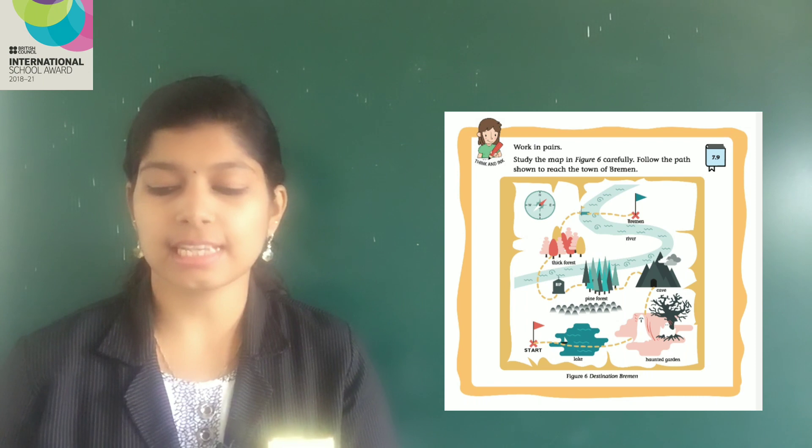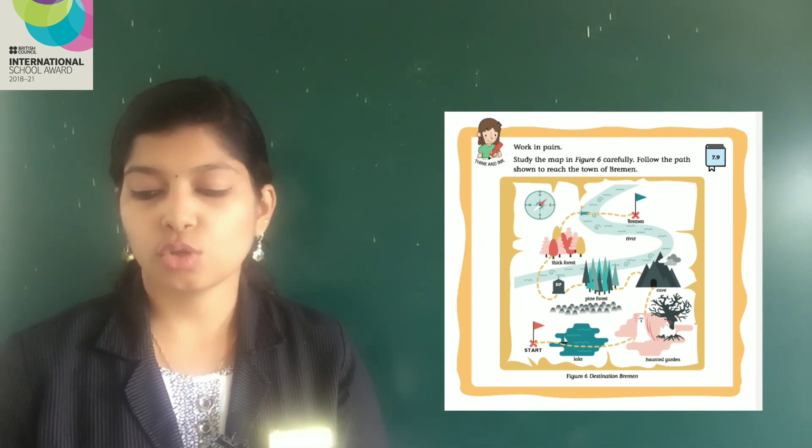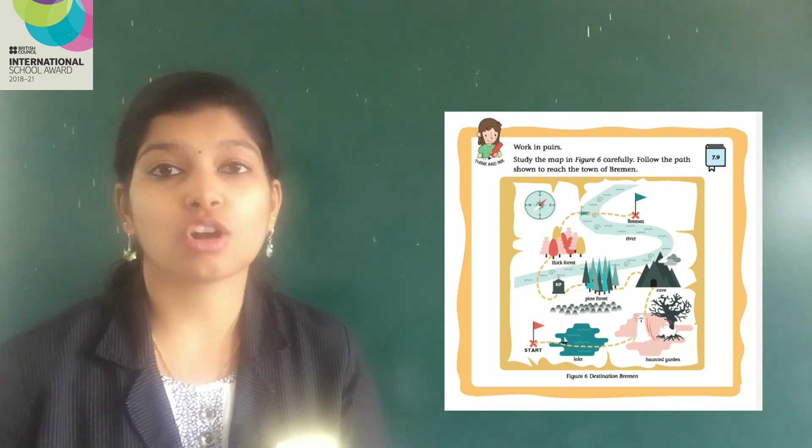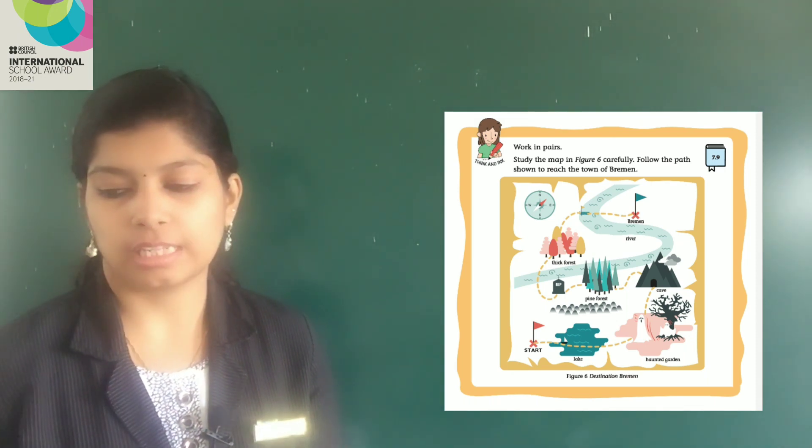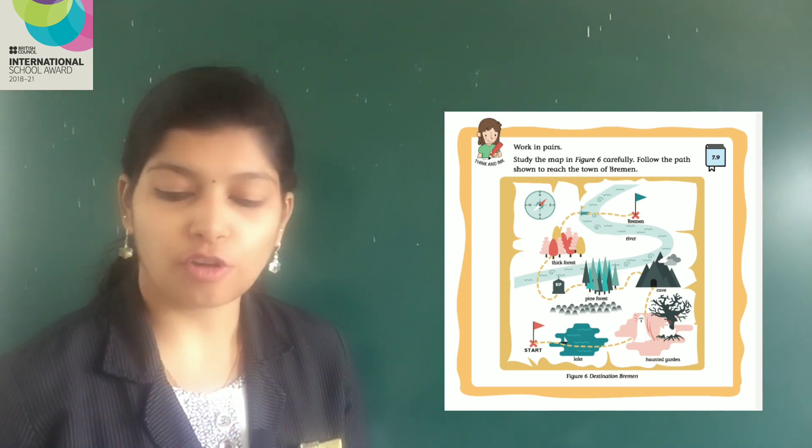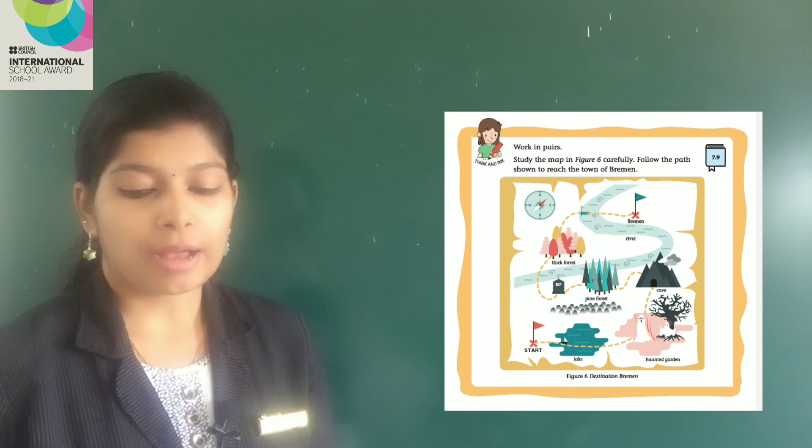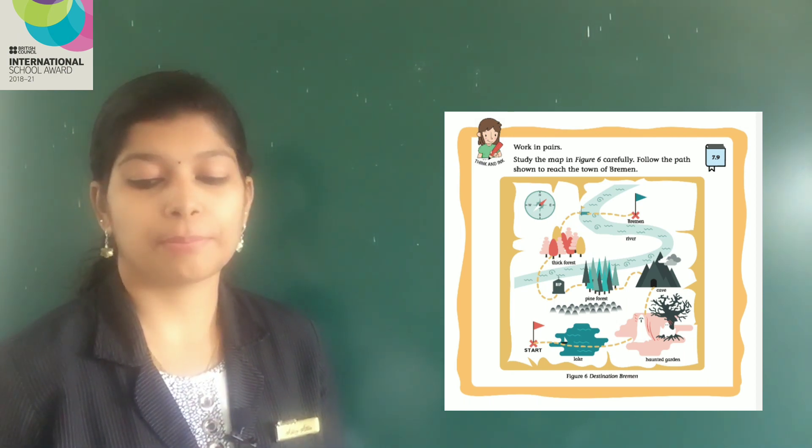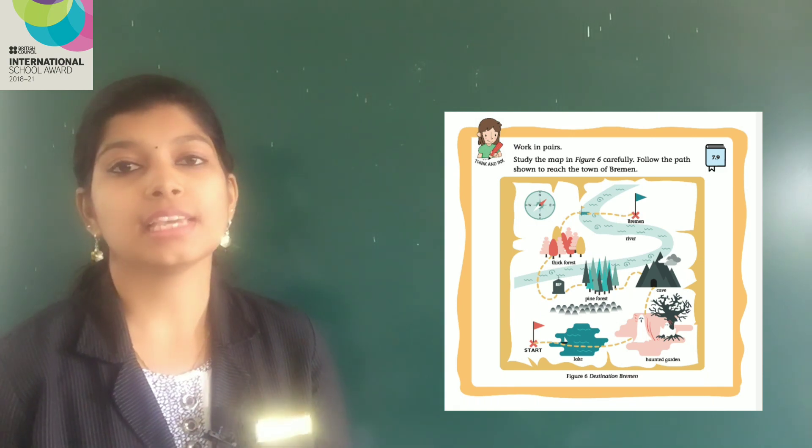You may start like this. First one: to reach Bremen, you have to first sail across the river. 'Across' is the preposition used here. You will then see a thick forest. Go through the forest. Your partner will write: But there are ghosts in the forest. It will be very scary.